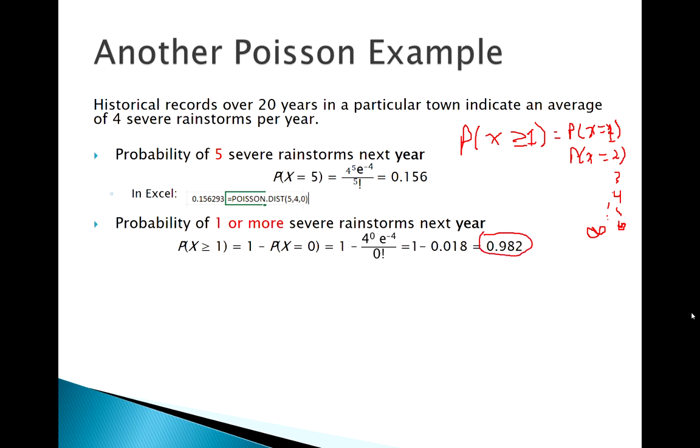One or more rainstorms next year is the same as saying one minus the probability of zero. We got a 98% chance of one or more rainstorms. We only have about a 2% chance of no rainstorms next year. I can plug that into Excel, don't forget my one minus.